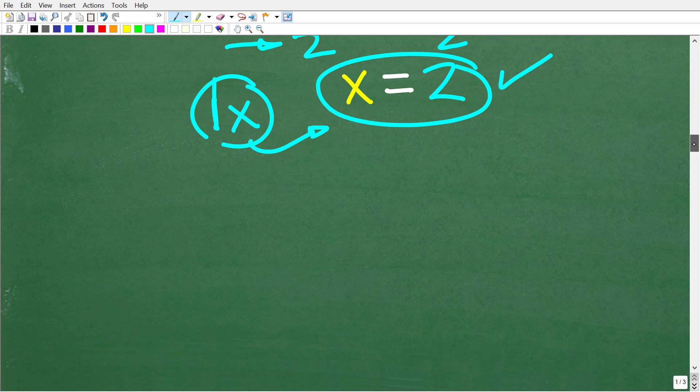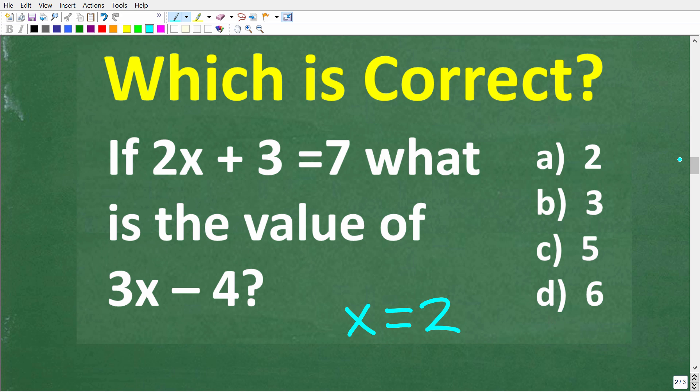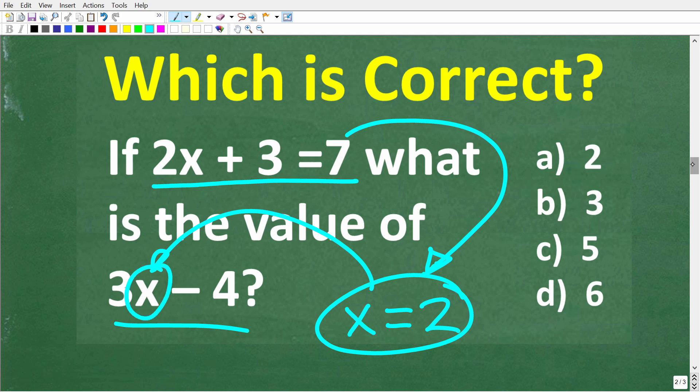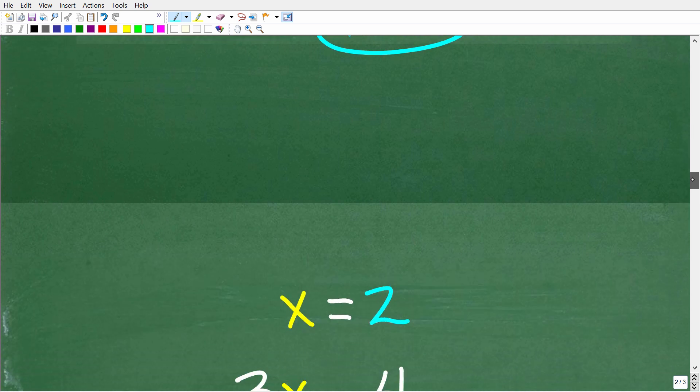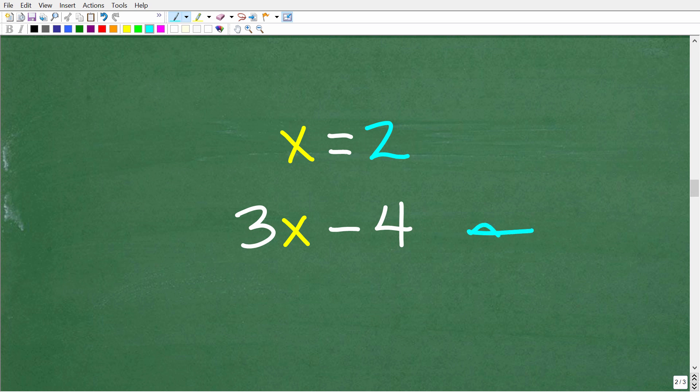All right, so now that we know that x is equal to 2, we can go back to our problem. All right, so if 2x plus 3 is equal to 7, this is a fancy way just to say, hey, x is equal to 2. So what is the value of 3x minus 4? Well, as I indicated, now that we know what x is equal to, all we have to do is plug in this value for x right there and then do the number crunching. So let's do that right now. So if x is equal to 2, what is the value of 3x minus 4?